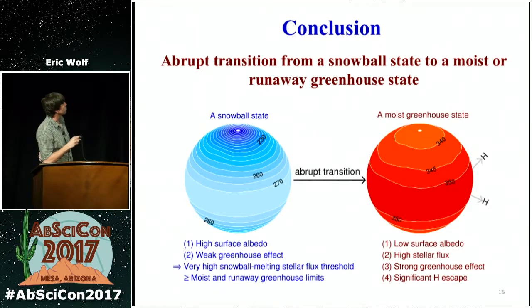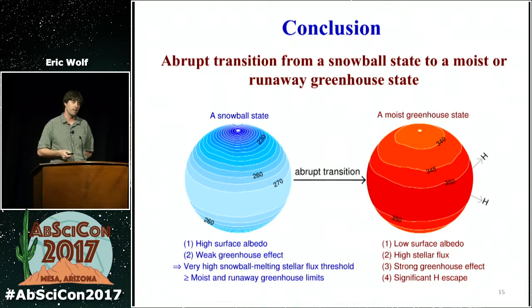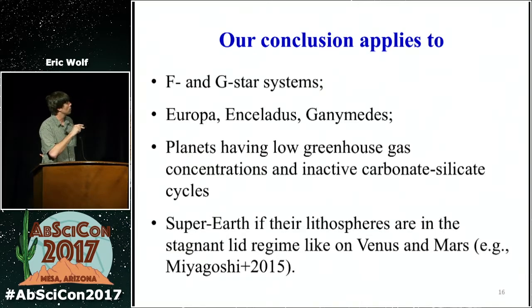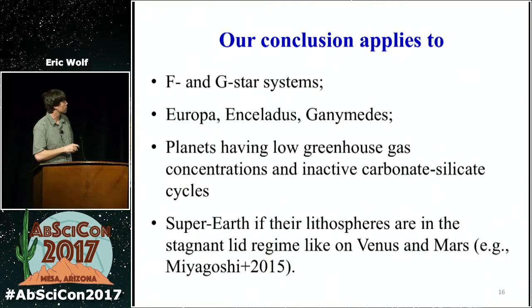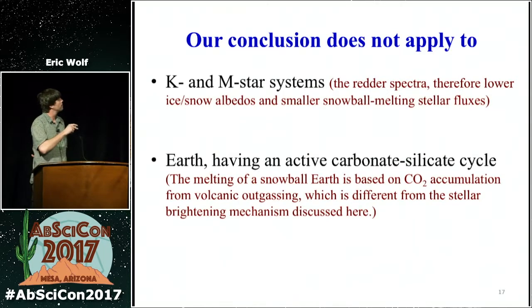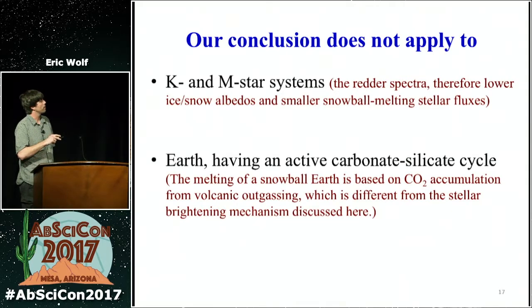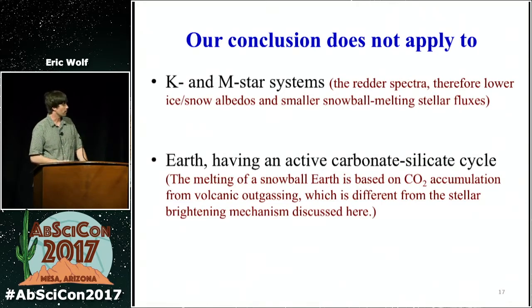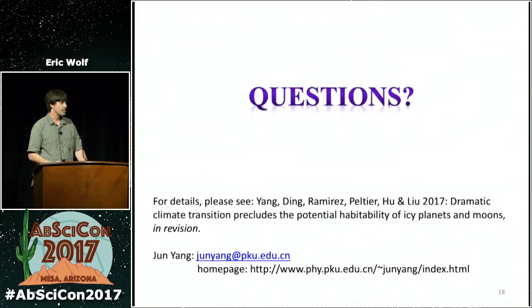To conclude, there's an abrupt transition from a snowball state to a moist or runaway greenhouse state as found in June's simulations, due to improved treatment of sea ice and glacial ice. This conclusion applies to F and G star systems, places like Europa, Enceladus, Ganymede, planets having low greenhouse gas concentrations and inactive carbon-silicate cycling, and super-Earths if their lithospheres are in the stagnant lid regime. These conclusions do not apply to M and K star systems because the redder spectra lower the effective sea ice and snow albedos, and also don't apply to Earth with active carbon-silicate cycling. Thank you — I'll take questions, but any answers are expressly my own and don't necessarily reflect those of the authors.